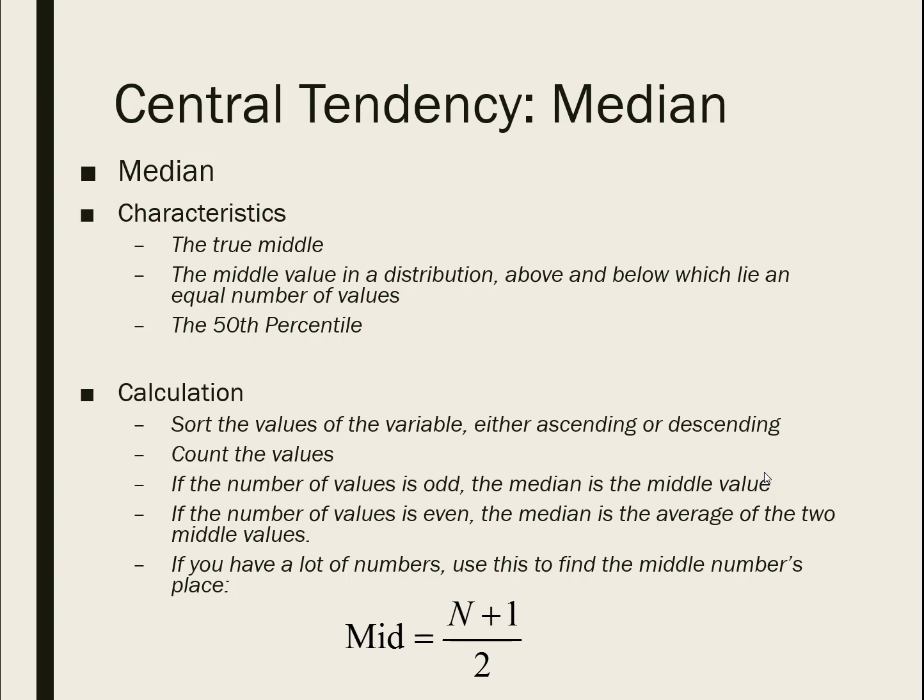I'm going to walk through some examples, but let's cover what I mean by the median and the mode as well, and then we'll look at them visually. The median is the true middle of a group of observations. If you have a variable that runs the number line, the median is going to be the exact middle. The 50th percentile is also the value of the median.